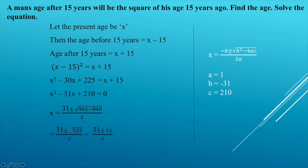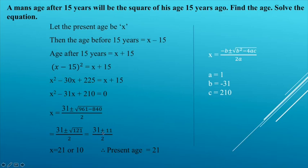This gives 31 plus or minus square root of 121, divided by 2. The square root of 121 is 11. So x equals (31 plus 11) divided by 2, which is 21, or x equals (31 minus 11) divided by 2, which is 10. Since age must be valid, the present age is 21 years.